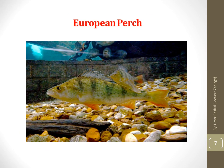The European perch is also commonly known as common perch, redfin perch, English perch, Eurasian perch, or Eurasian river perch. It is a predatory species of freshwater perch native to Europe and Northern Asia. It is a popular quarry for anglers and has been widely introduced beyond its native area into Australia, New Zealand, and South Africa.